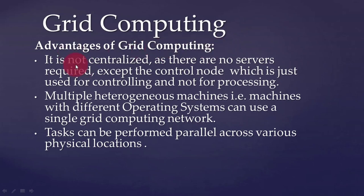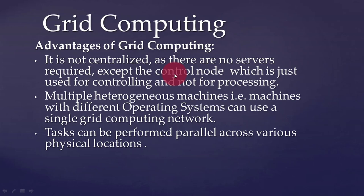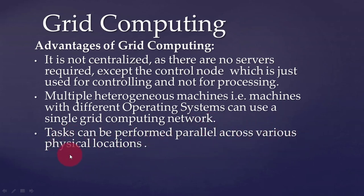Advantages of grid computing: First, it is not centralized — there are no servers required except the control node, which is used only for controlling and not for processing. Second, multiple heterogeneous machines — machines with different operating systems can be used in a single grid computing network. Third, tasks can be performed in parallel across various physical locations, which is why HPC — high performance computing — is applied.